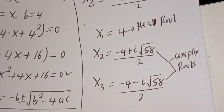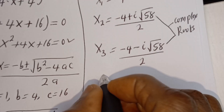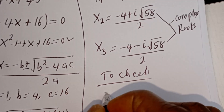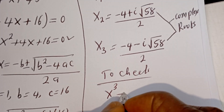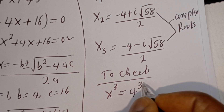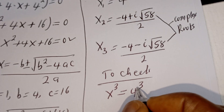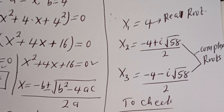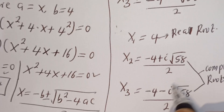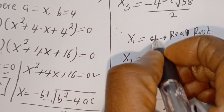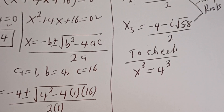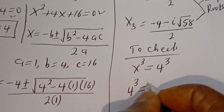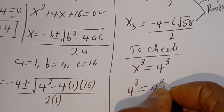We can check to confirm if our answer is right or wrong. To check: we have s to the power of 3 is equal to 4 to the power of 3. We can only check using the real root, that is s is equal to 4. Then the left hand side gives 4 to the power of 3 is equal to 4 to the power of 3, which is true.